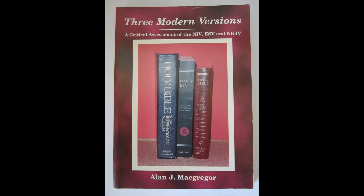Here is an example from the preface where he says, "I do not assert, as some do, that there is nothing good in these versions. I believe it is right to acknowledge that they have certain strengths and, on occasions, improved renderings. It does not weaken the AV case to say so. Many sincere believers use the NIV and the NKJV, and now some the ESV. I do not dismiss them as worldly or heretical, as some of the extreme defenders of the authorized version do." McGregor makes the point that the primary issues in choosing a good translation concern both its accuracy and the manuscripts on which the translation is based.